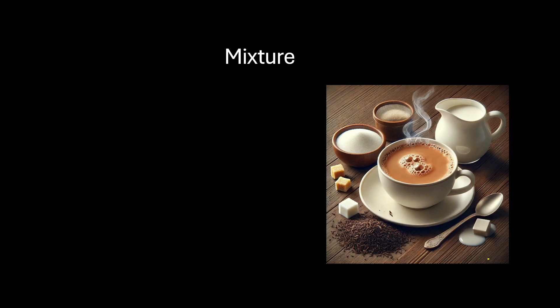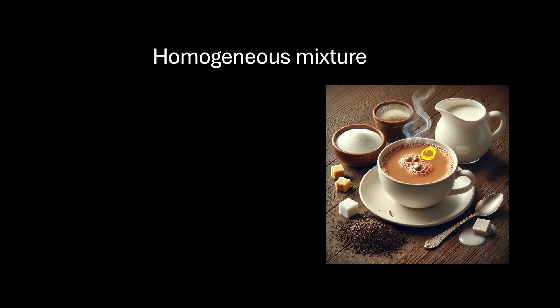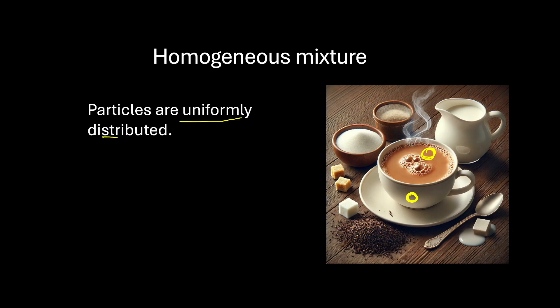But if we consider the tea in the room, it is composed of maybe tea leaves, sugar, milk, and some other additives like ginger or cinnamon. So tea is an example of a mixture. A mixture contains particles of two or more pure substances, which may be present in any ratio; hence their composition is variable. We can add the components in any amounts we want — there is no fixed ratio. If I taste the tea from the top or from the bottom, the taste and sweetness level will be the same, so we can say the particles are uniformly distributed and the composition is uniform throughout.